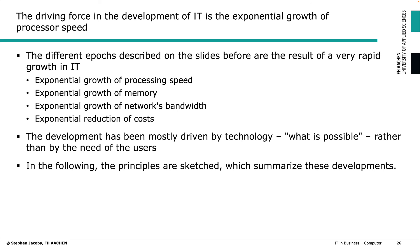Fifty years of constant exponential growth, and at the same time an exponential reduction of costs relative to IT equipment performance. The development has been mostly technology-driven. People did not ask for more performant computers — it was simply possible with the technology to make computers faster and faster. Later, people had to think about what to do with these high-performance computers. Those who had a good idea early on developed new business models. This exponential growth is described in more detail in the following principles.